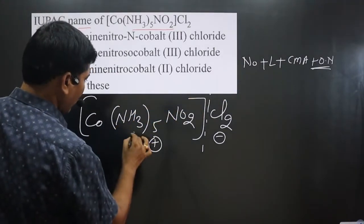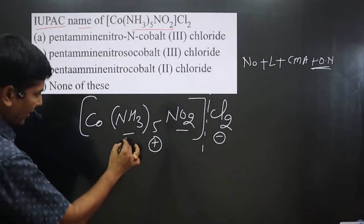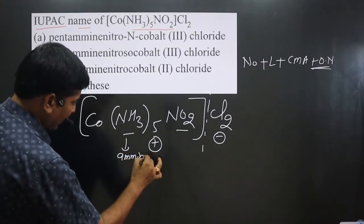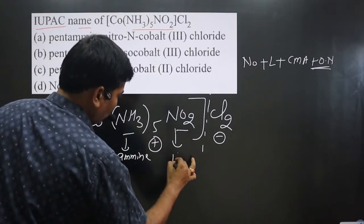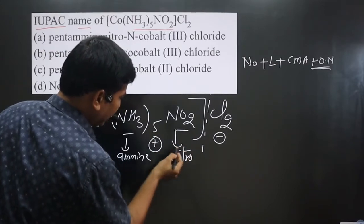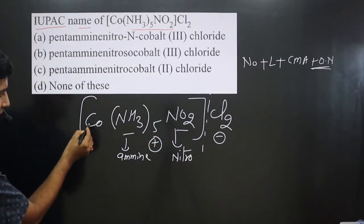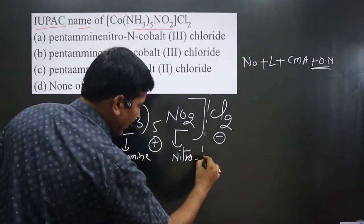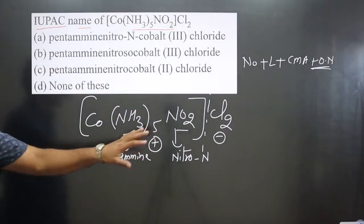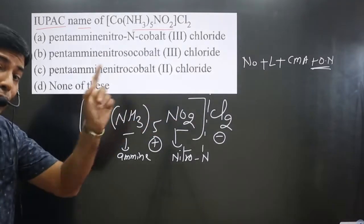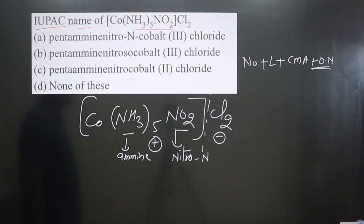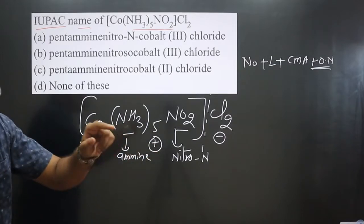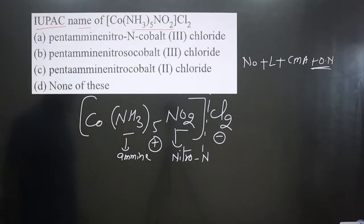There are two types of ligands. This is amine, and this is nitro. In this case, nitrogen is donating electron density to the central metal atom, so we write 'nitro-N' because this is an ambidentate ligand — oxygen can also donate electron density. If oxygen were donating, we would write 'nitrito-O'.